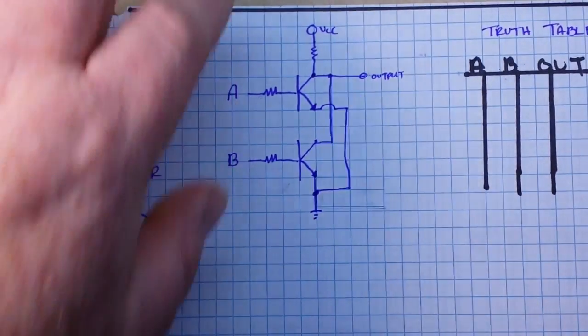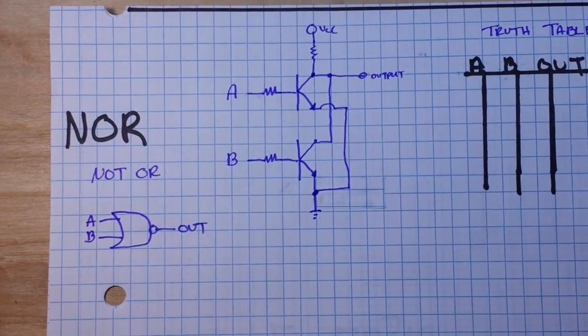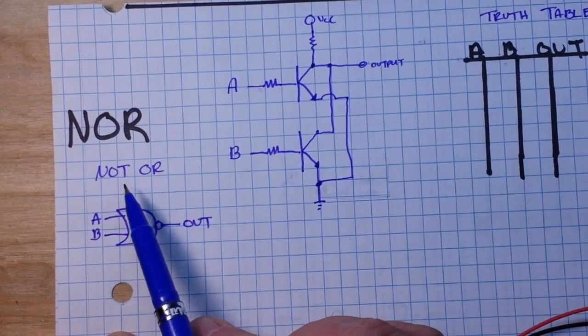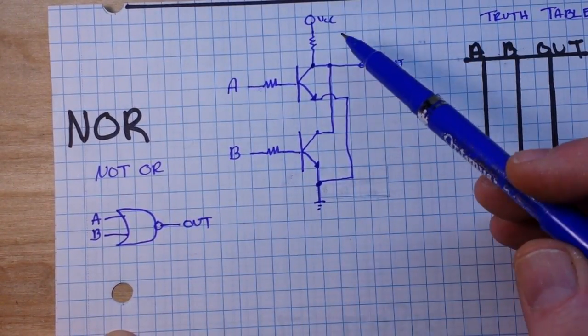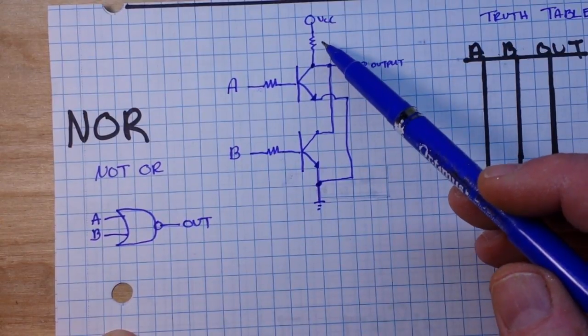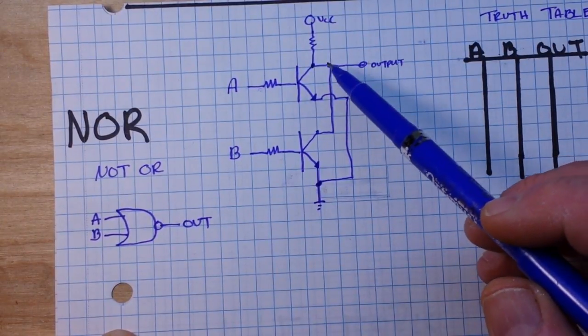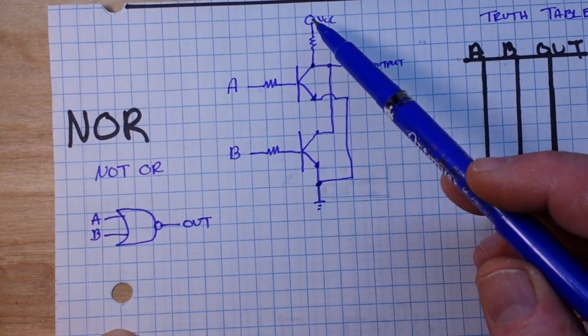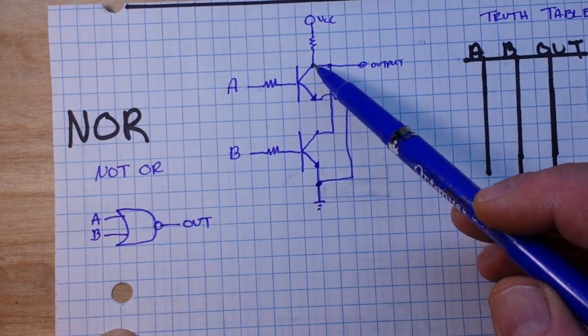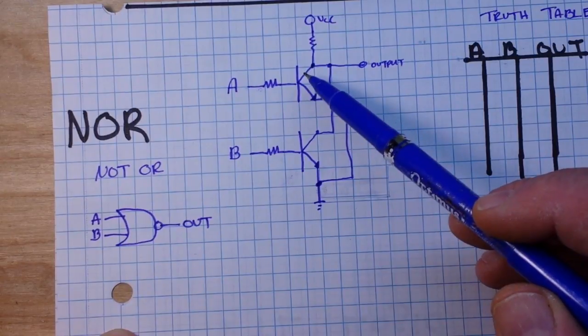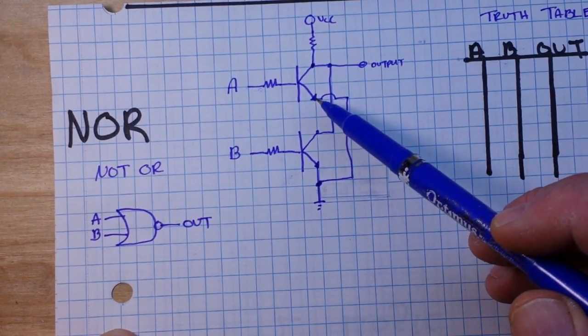So now let's take a look at the NOR gate. Remember the NOR is the NOT OR and there is its symbol. Now the wiring looks more complex as it's drawn but it's really not. So VCC comes down to the collector of the first transistor, and the emitter of the first transistor then goes down to ground.